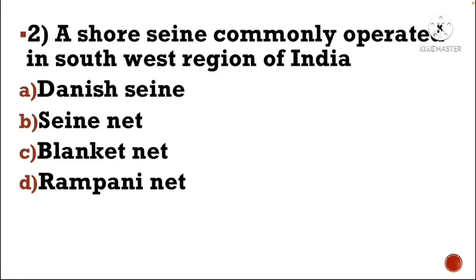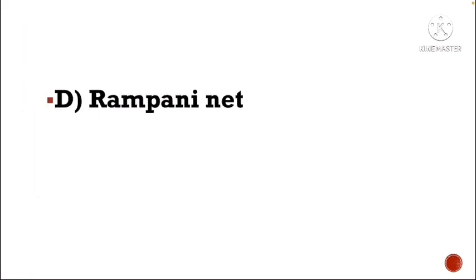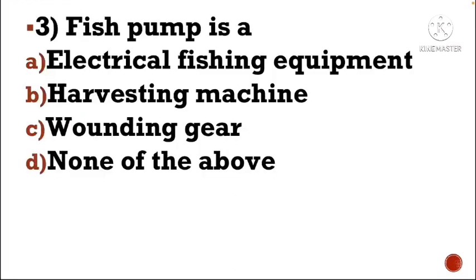Next question: A shore seine commonly operated in the South West region of India — Option A: Danish seine, Option B: seine net, Option C: blanket net, Option D: rampani net. The correct answer is Option D, rampani net.